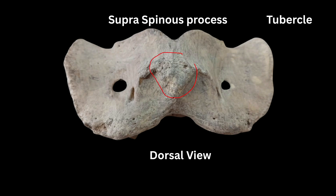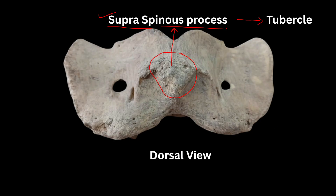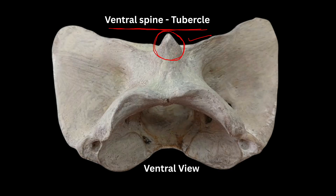The supra spinous process is in the form of a tubercle. The ventral spine is also in the form of a tubercle. So both the supra spinous process and the ventral spine are tubercle-shaped.